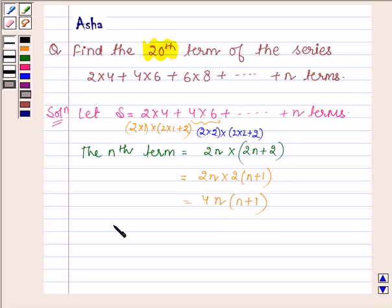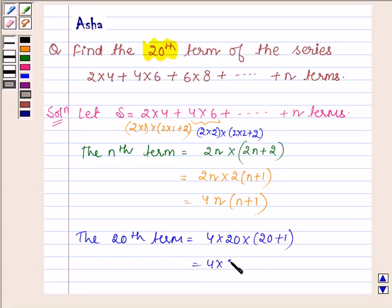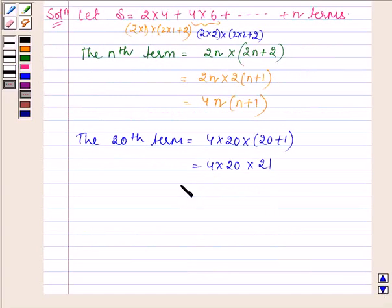So this is the nth term and we have to find the 20th term. So replacing n by 20, we have 4 into 20 into 20 plus 1 which is equal to 4 into 20 into 21, or 4 into 20 is 80 into 21 which is equal to 1680.